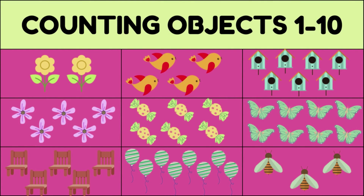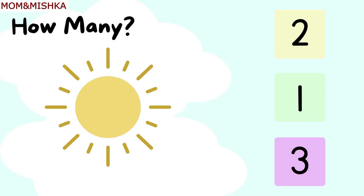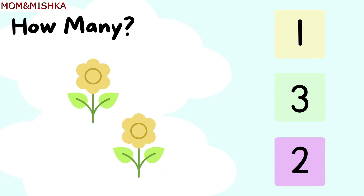Counting objects 1 to 10. How many suns? One. One sun. How many flowers? One, two. Two flowers.